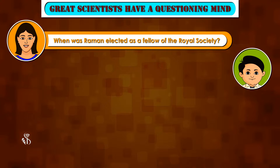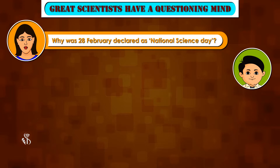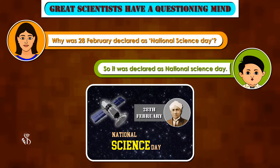When was Raman elected as a Fellow of the Royal Society? In year 1924, Raman was elected as a Fellow of the Royal Society. Why was 28th February declared as National Science Day? Raman discovered the Raman effect on 28th February, so it was declared as National Science Day.